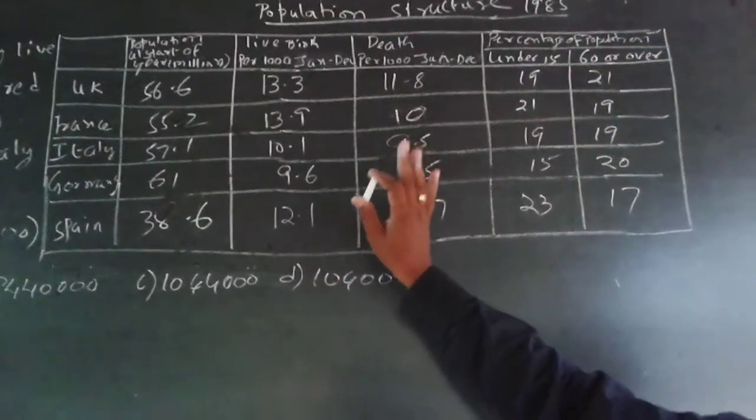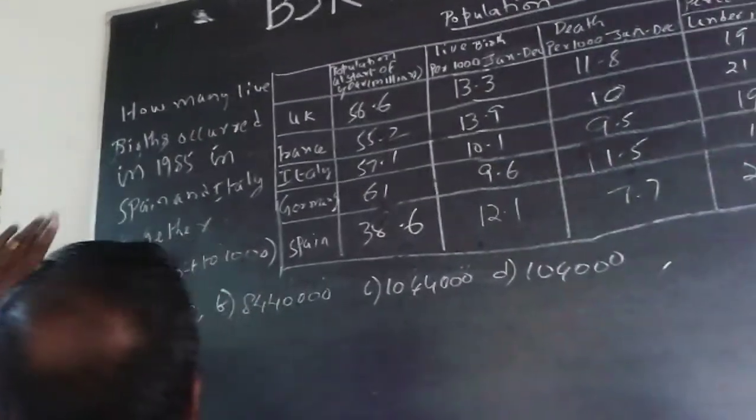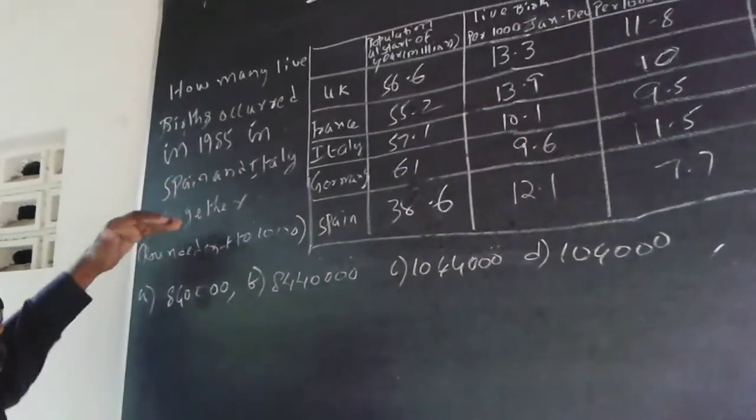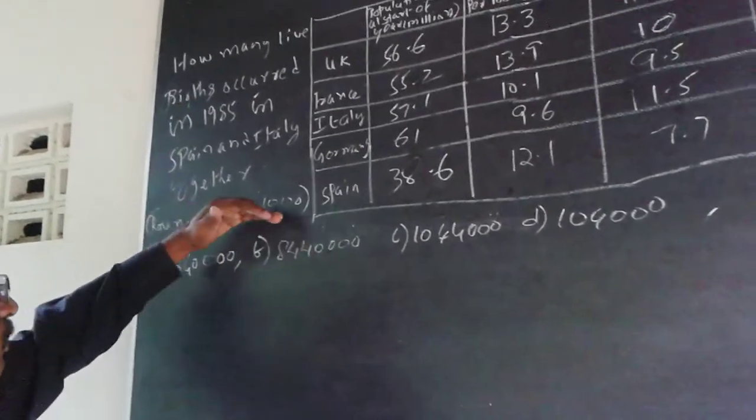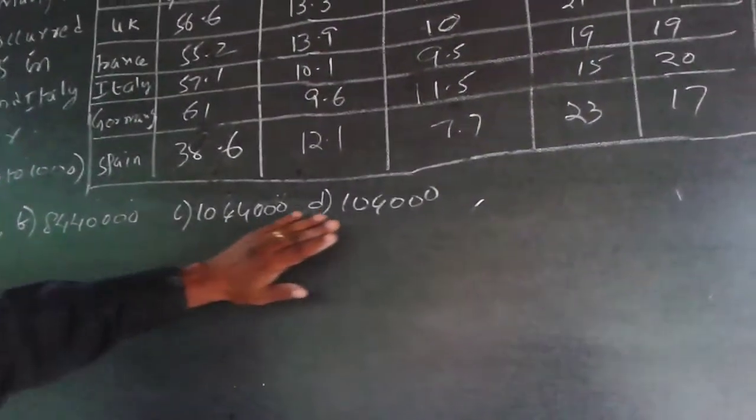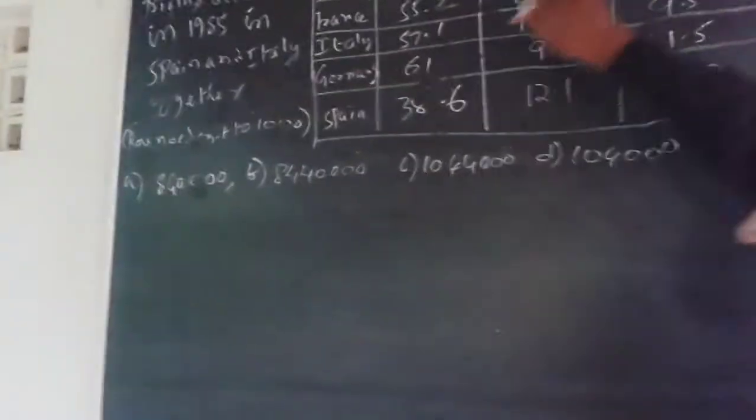Data interpretation problem. Now the question here is how many live births occurred in 1985 in Spain and Italy together, rounded off to the nearest thousand? The options are 840,000, 1,044,000, and 1,064,000. The table is given here.